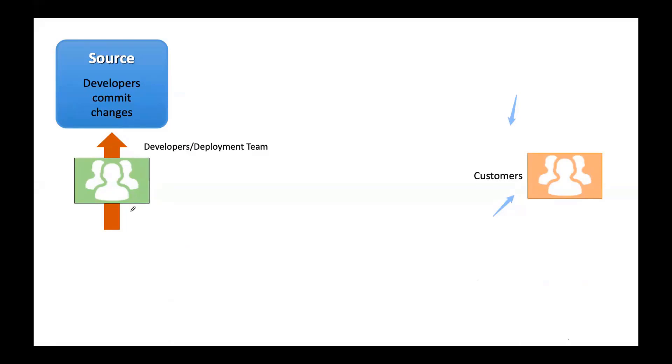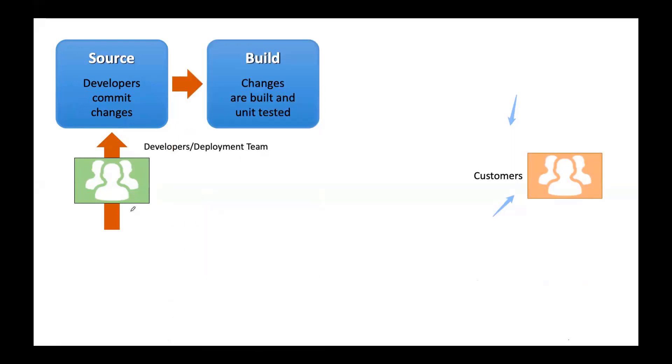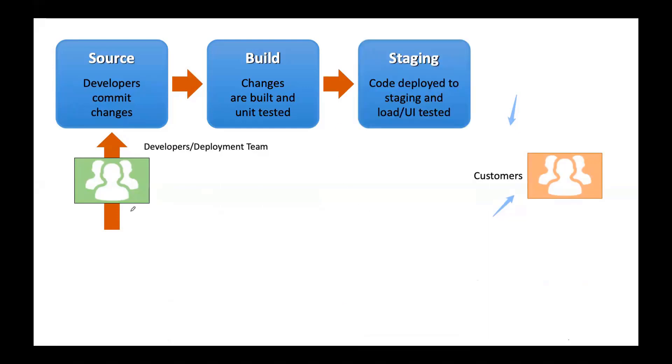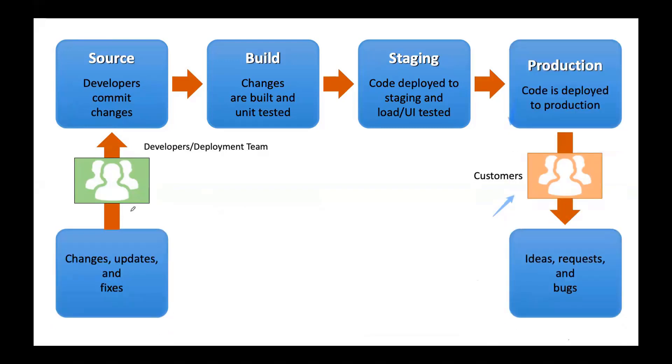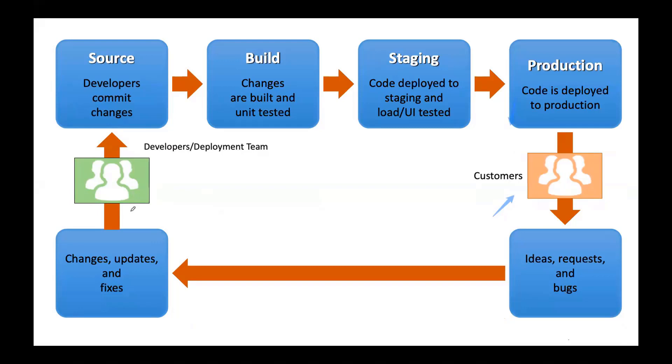A typical pipeline works like this: all developers commit code to a central location, the pipeline picks it up, builds it, runs test cases, deploys to a staging environment, and if the client approves, it releases to production — and then the cycle repeats. This is what we call CI/CD: Continuous Integration and Continuous Deployment. This is the DevOps pipeline.